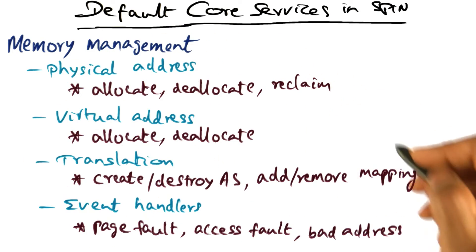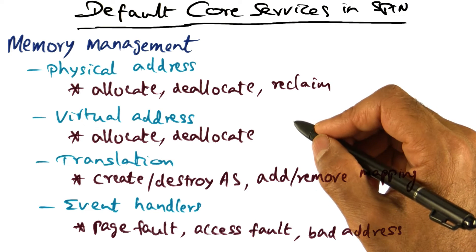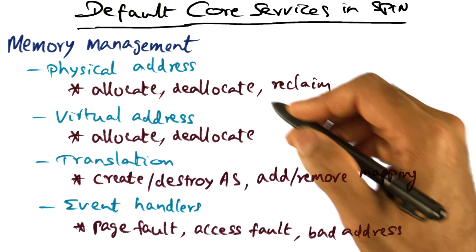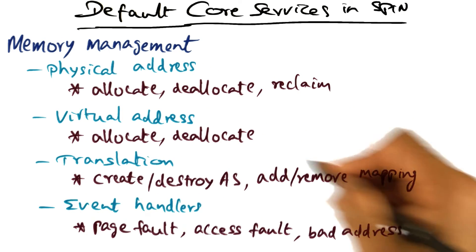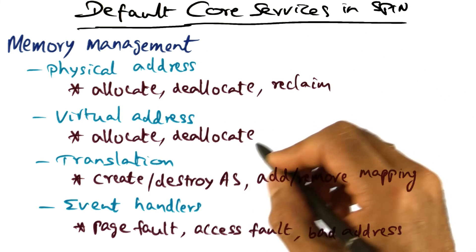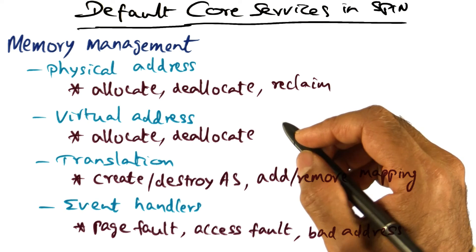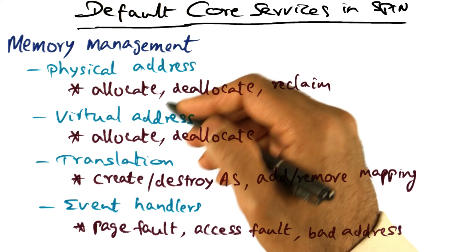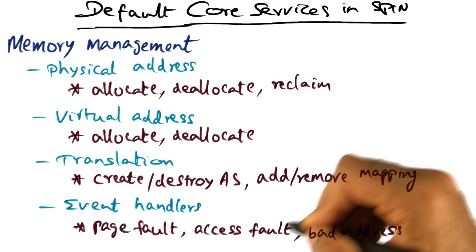It is not saying anything about how these services are implemented, but is giving you just a header file. The implementer of an extension has to write the actual code for these header functions and create a logical protection domain that corresponds to physical address management, virtual address management, translation management, and the handler functions for dealing with these different types of events. Once the logical protection domain is dynamically instantiated, it becomes an extension of Spin. After that, there is no border crossing between a particular service that has been instantiated and Spin itself. All of these functions are invoked automatically when the hardware events occur, corresponding to a page fault or access violation fault and so on.